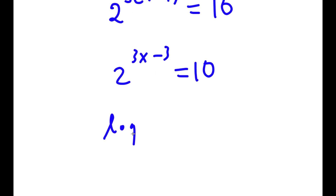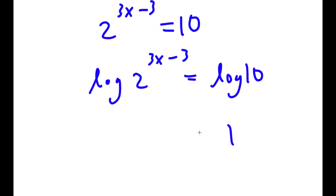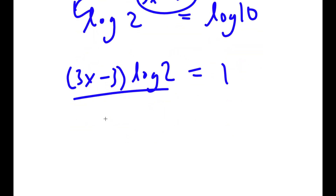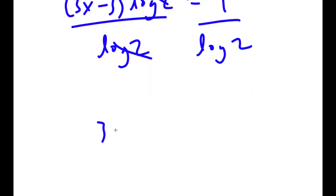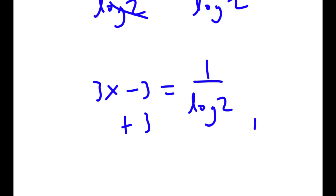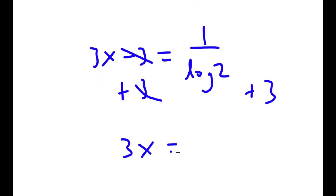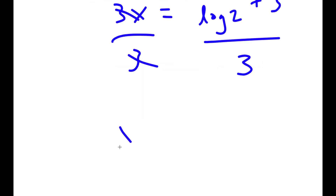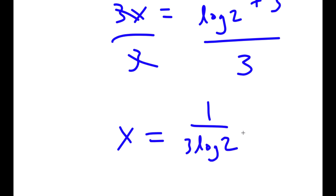Now I take the log on both sides: log of 2 to the power of (3x minus 3) equals log 10. Since log 10 equals 1, I get 1 equals (3x minus 3) times log 2, moving the exponent to the front. Dividing both sides by log 2 gives 3x minus 3 equals 1 over log 2. Adding 3 to both sides gives 3x equals 1 over log 2 plus 3, and dividing by 3 gives x equals 1 over (3 log 2) plus 1.